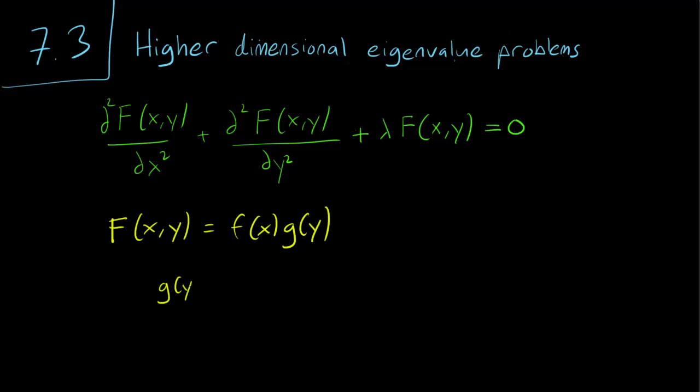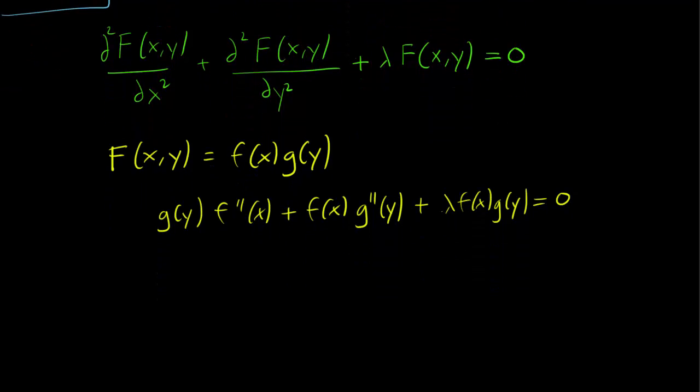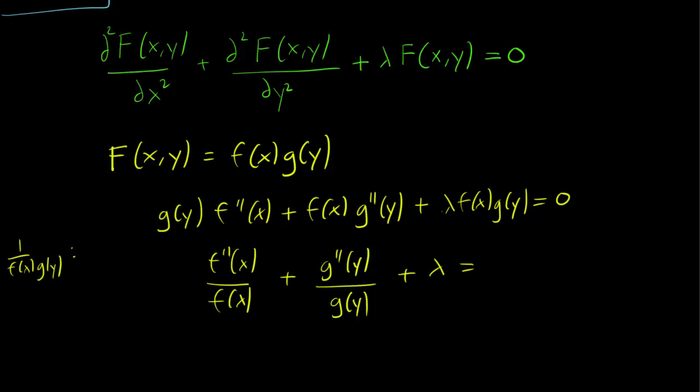I'm going to make things a bit quick, so we have g(y)f''(x) plus f(x)g''(y) plus lambda f(x)g(y) equals 0. Let us now divide every term by f(x)g(y), so if you divide, what you get is f''(x)/f(x) plus g''(y)/g(y) plus lambda equals 0.